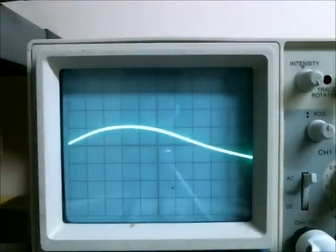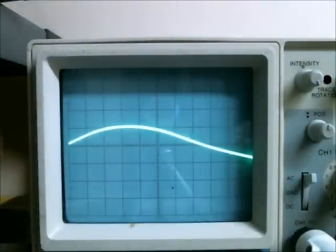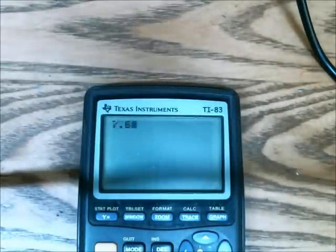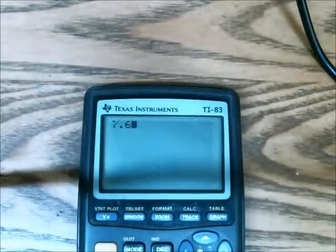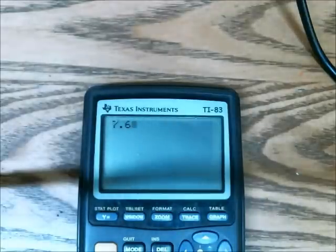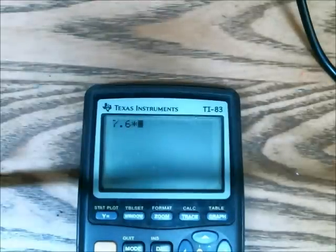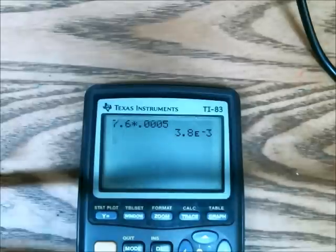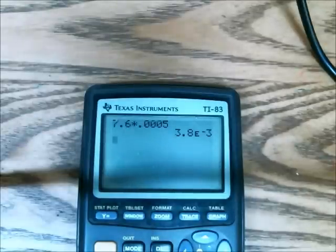I'm going to do the math on the calculator real quick. Earlier I said there were 7.6 divisions and 0.5 milliseconds per division. So multiply 7.6 by 0.0005, and there were five blades, so I need to multiply the number of milliseconds by 5.